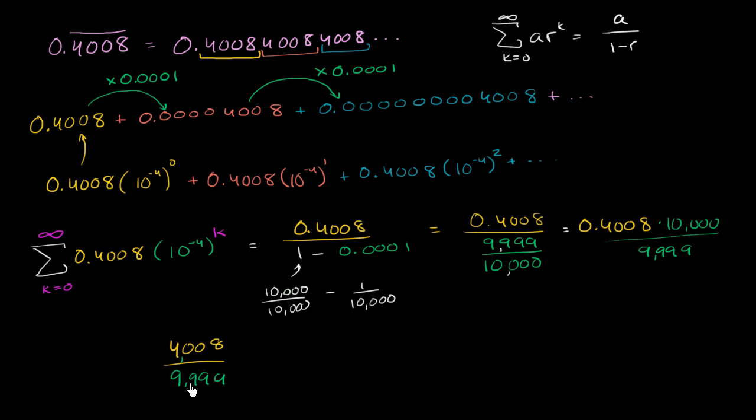And this down here is clearly divisible by 3, so let's divide both of them by 3. So 3 goes into 4,008. It goes into 4 one time. Subtract, you get a 10. 3 times 3 is 9. Subtract, you get another 10. It goes in 3 times. 3 times 3 is 9. Subtract, bring down an 8. 3 goes into 18 exactly 6 times. So our numerator is 1,336. This is no longer divisible by 3. And if you divide this bottom number by 3, you get 3,333.